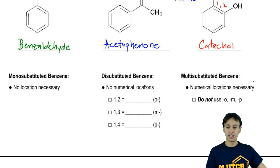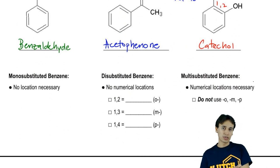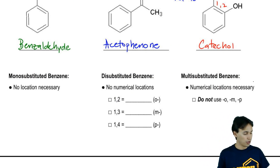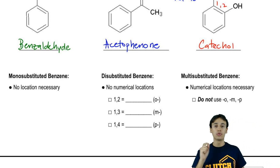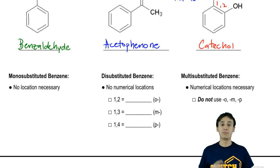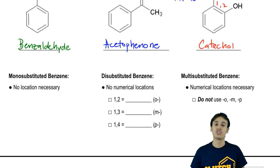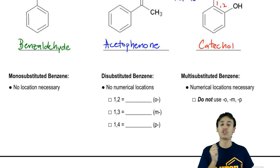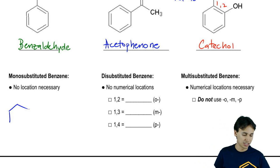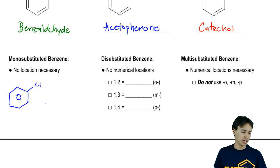Now let's talk about locations. It turns out that the way that you number your substituents actually depends on the number of substituents you have. Monosubstituted benzene, no location necessary. So if you have a methyl benzene, you should just call that toluene. You should not call that one toluene. You don't need to do that. Or let's say that you have a chlorine on the benzene. You should not call that one chlorobenzene. I'm just going to write an example here of Cl and that would be chlorobenzene.